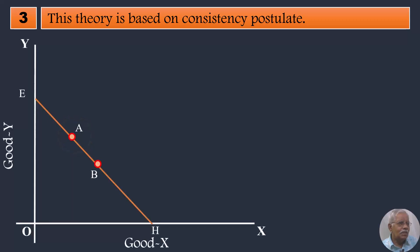If the same combinations A and B are available in other occasions, the consumer must choose only combination A and not B at any cost. This is what we mean by consistency behaviour on the part of the consumer.